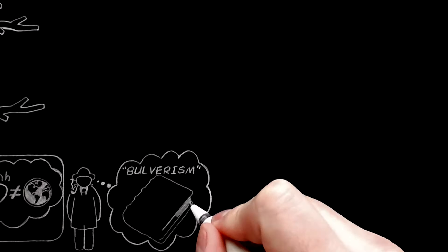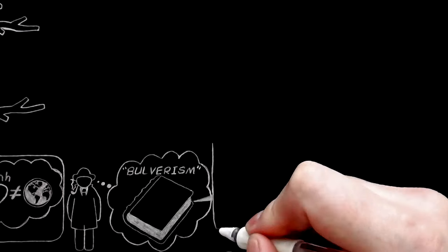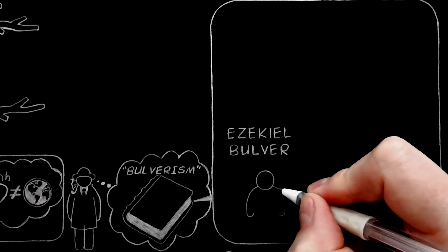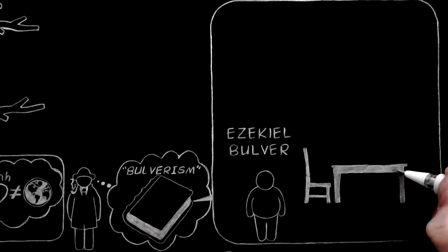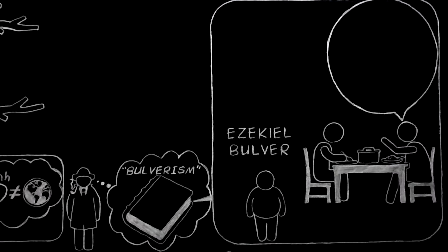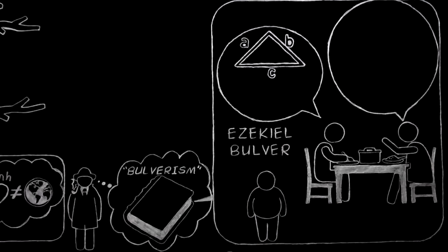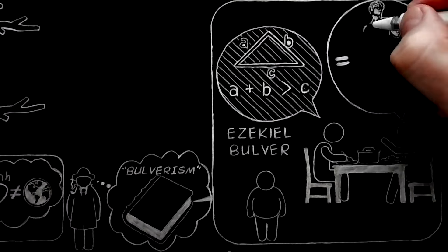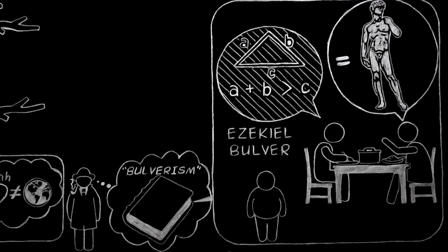Someday I am going to write the biography of its imaginary inventor, Ezekiel Bulver, whose destiny was determined at the age of five when he heard his mother say to his father, who had been maintaining that two sides of a triangle were together greater than the third: 'Oh, you say that because you are a man.'